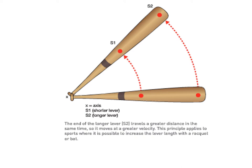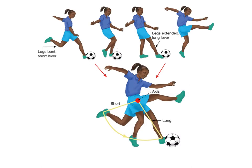In the baseball example, the velocity at the end of the bat is much greater than at the middle because it travels a further distance in the same time. A longer bat generates greater velocity than a shorter bat — think of S1 as a shorter bat and S2 as a longer bat. The longer lever gives greater velocity or bat/club/stick speed, all other things being equal. That's the mechanical advantage: we can generate greater velocity by having a fully extended lever.